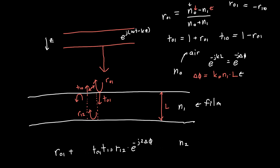But we also have to worry about all the other reflections — the wave keeps bouncing around inside the film and coming back out, so we have an infinite sum of waves to consider. Let's calculate the third wave and then spot a pattern. The third wave needs to be first transmitted into the film — t01 — then pick up a phase e^(−j·delta_phi), reflect off the back r12, pick up another phase, reflect off the front r10, pick up another phase, bounce off the back again r12, pick up a final phase, and then finally get transmitted out T10.